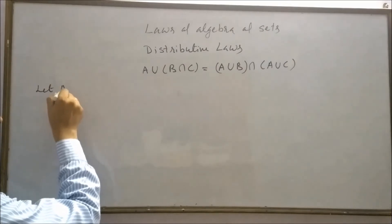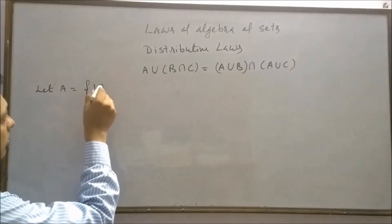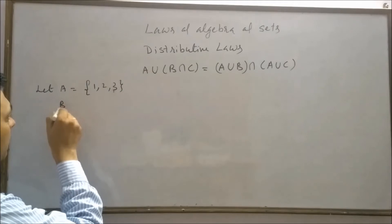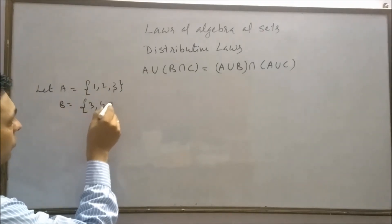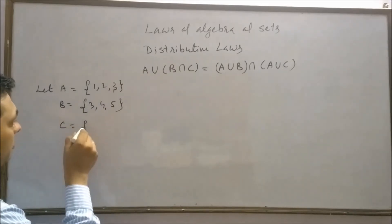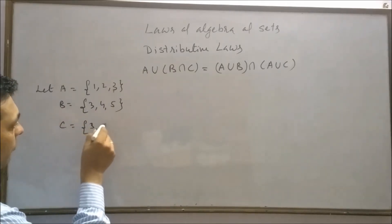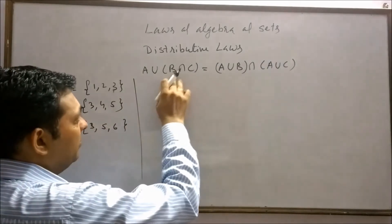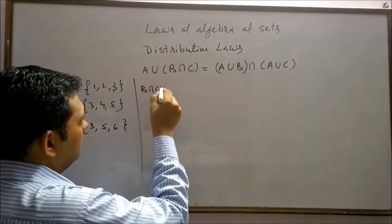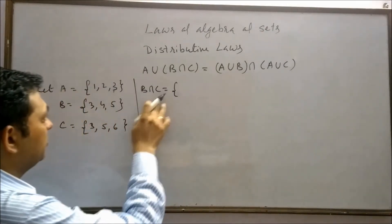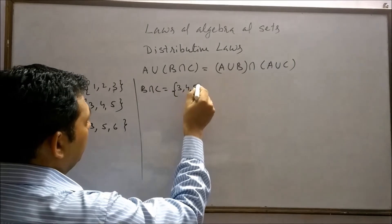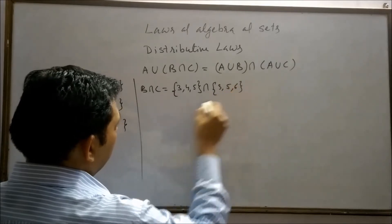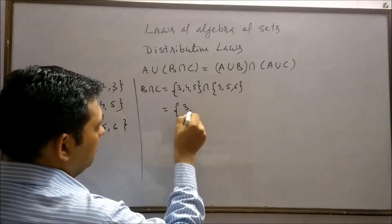Let A = {1, 2, 3}, set B = {3, 4, 5}, and set C = {3, 5, 6}. First of all, we will find B intersection C. B intersection C: the sets are {3, 4, 5} and {3, 5, 6}, so the common elements are 3 and 5.